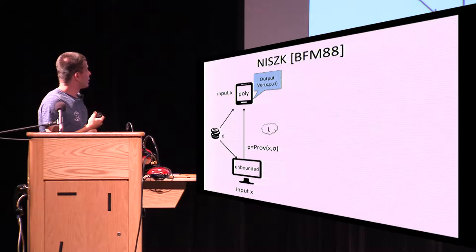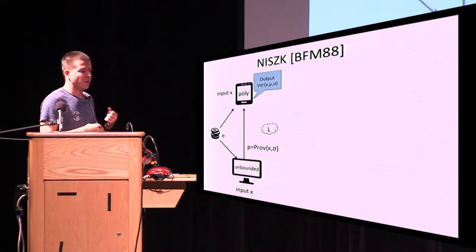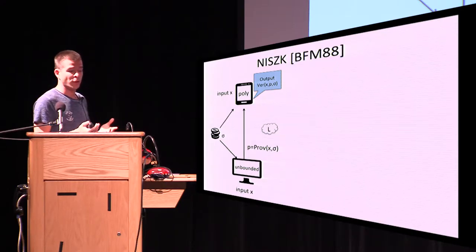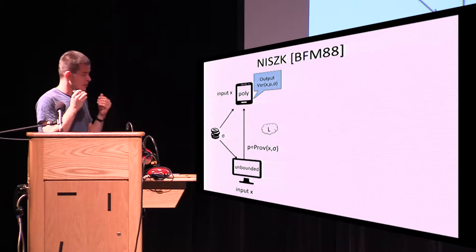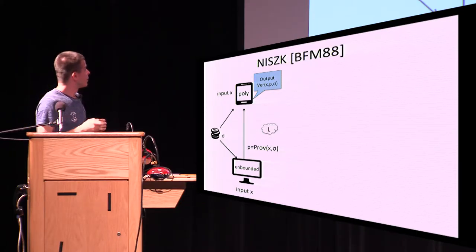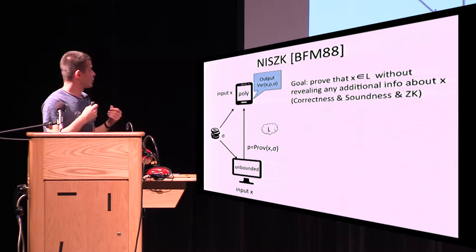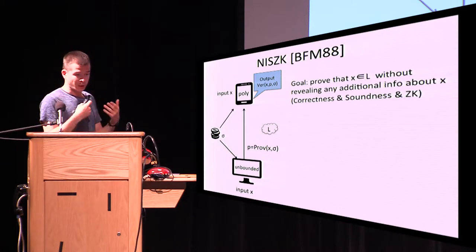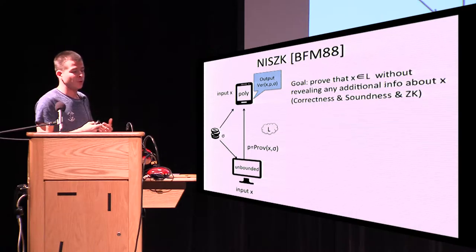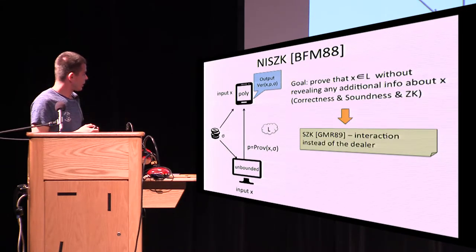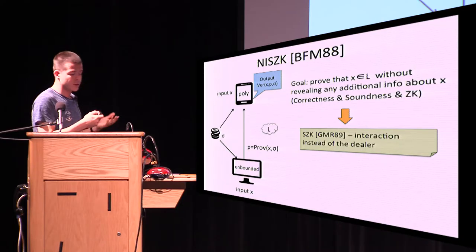Now let's talk about the NISC setting. In standard SZK there is interaction between client and server, but in NISC this interaction is substituted with a dealer who gives them common randomness. The dealer creates common randomness and sends it to both parties; the server then computes a proof, sends it to the client, and the client accepts or not. The goal is for the server to prove the input is in the language without revealing any additional information. There is correctness — the server can always prove a correct statement — soundness — the server cannot prove an incorrect statement — and zero-knowledge — the client learns nothing except whether the input is in the language.